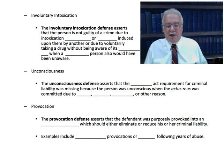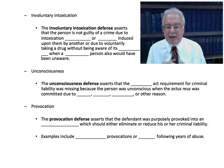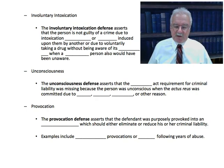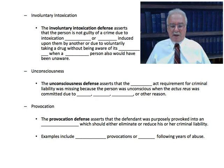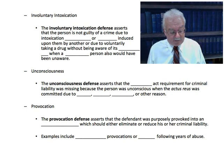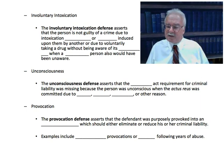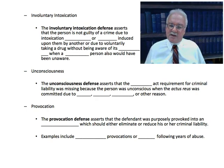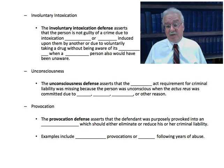The provocation defense asserts that the defendant was purposely provoked into an emotional rage which should either eliminate or reduce his or her criminal liability. Examples include barroom provocations where someone makes an inflammatory statement, or family violence situations after years of abuse — such as a woman who is regularly abused by her husband and at some point strikes out and kills or injures him. That becomes a difficult defense because if the husband was not actually attacking the woman at that point, self-defense doesn't apply, and provocation is also difficult to prove — but it could still be a defense.